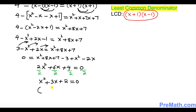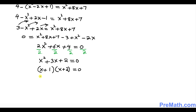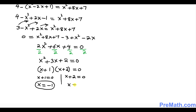We can factor this quadratic equation. The possible factors are (x+1) and (x+2), since 1 times 2 equals 2 and 1 plus 2 equals 3. So we write (x+1)(x+2) equals 0, giving us x plus 1 equals 0 or x plus 2 equals 0. That means x equals negative 1 or x equals negative 2.